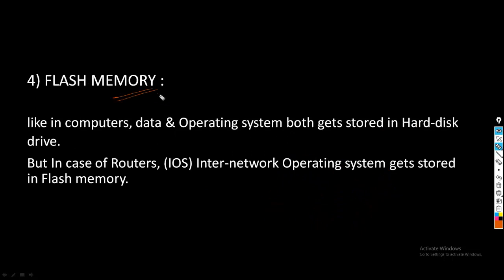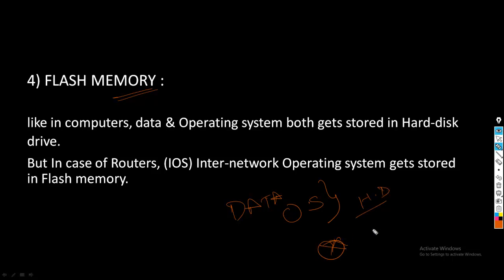The next component of router is flash memory. In computers, data and operating system both get stored in the hard disk drive. But in the case of routers, IOS — that is Internetwork Operating System — gets stored in flash memory.